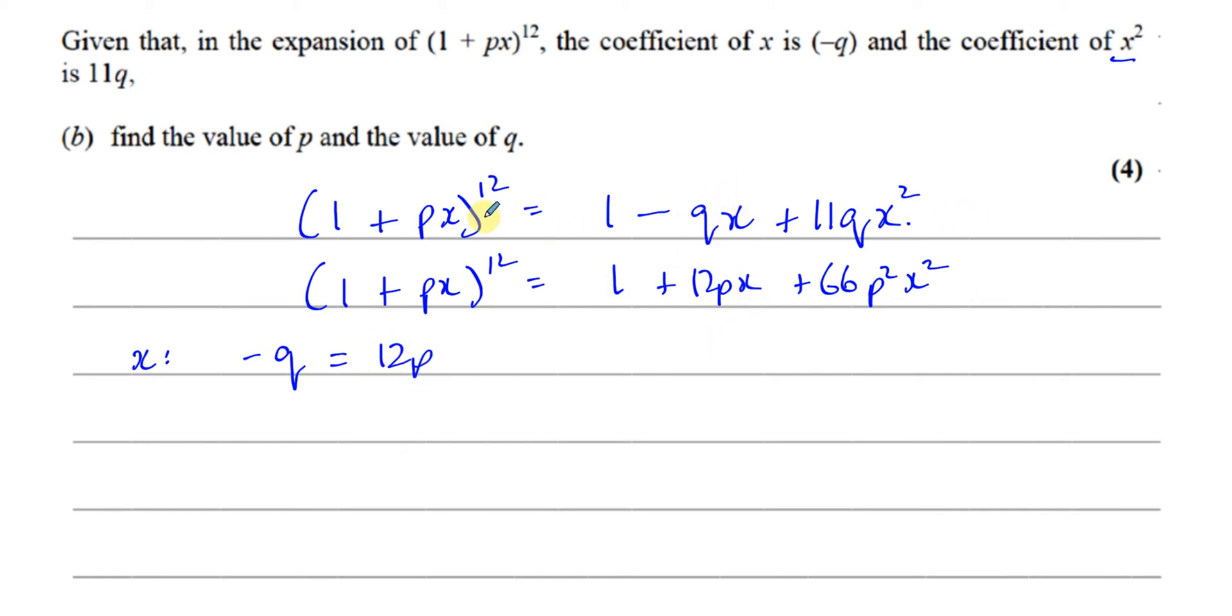This is the same as that, because they're both equal to the same thing. They must be equal to each other. So I can say minus Q must be 12P. And if I compare the X squared coefficients, I can see that 11Q must be the same as 66P squared.